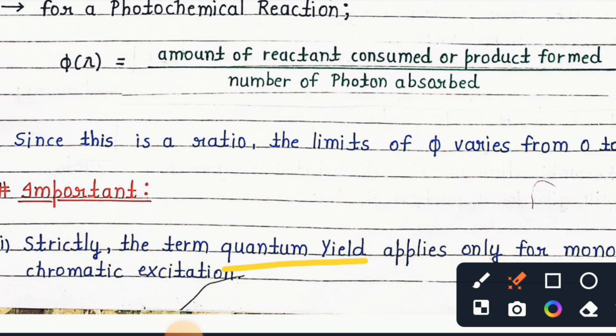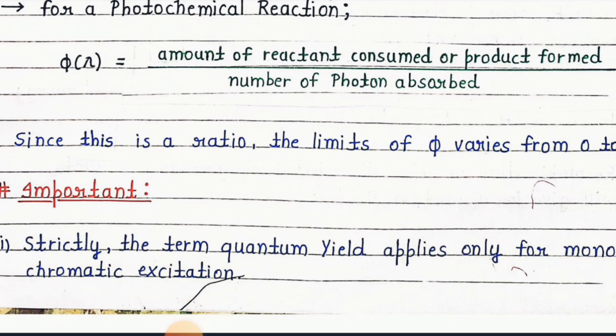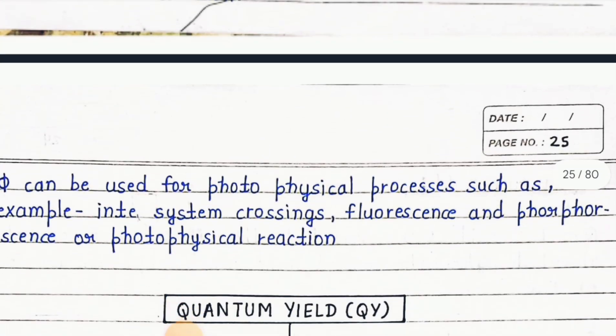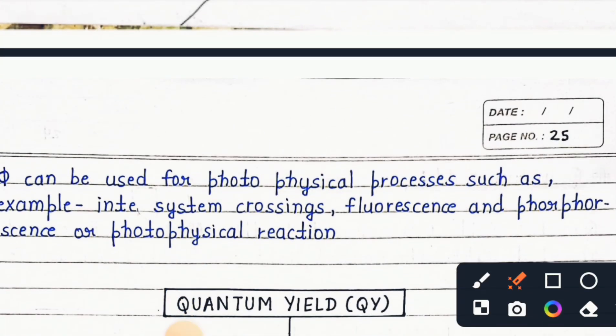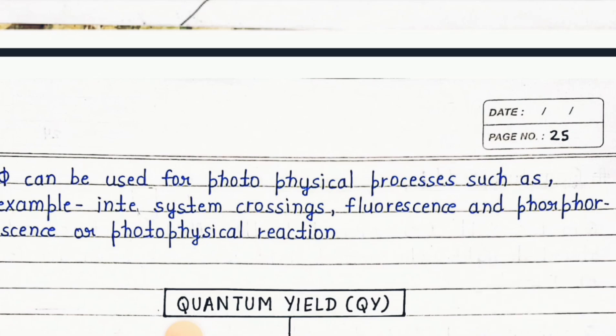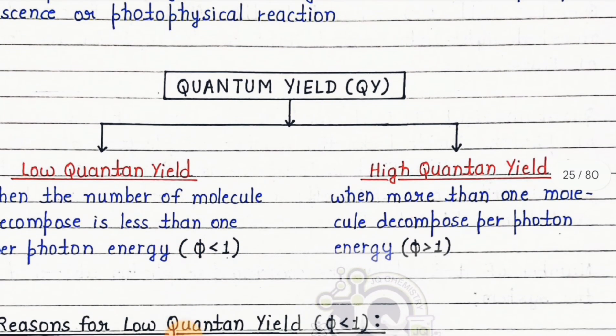applies only for monochromatic excitation. φ can be used for photophysical processes such as, for example, inter-system crossing, fluorescence, phosphorescence, or photophysical reactions. Quantum yields are of